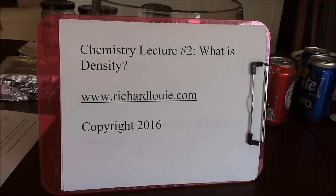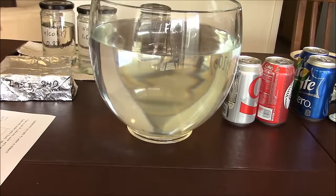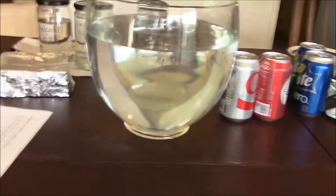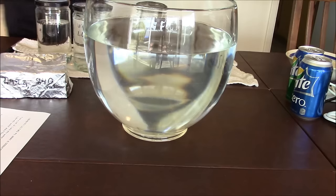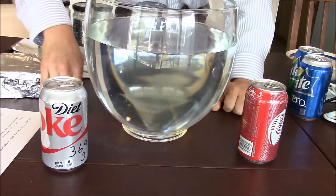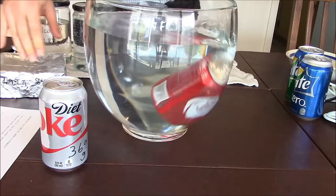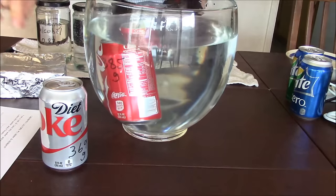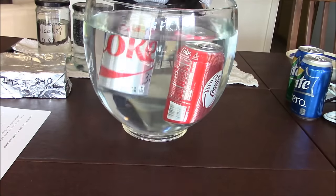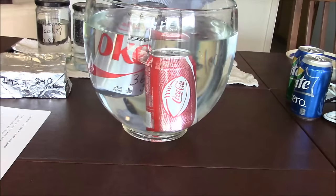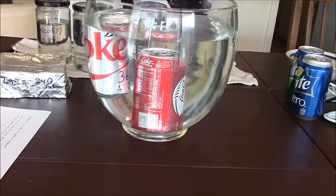Chemistry lecture number two: what is density. I'm going to show you something interesting. If we take two different cans of soda and drop them into this container of water, something interesting happens. If I take regular Coke, it sinks to the bottom, but if I take the Diet Coke, it floats. So we have regular Coke which sinks and Diet Coke which floats. Why does that happen?